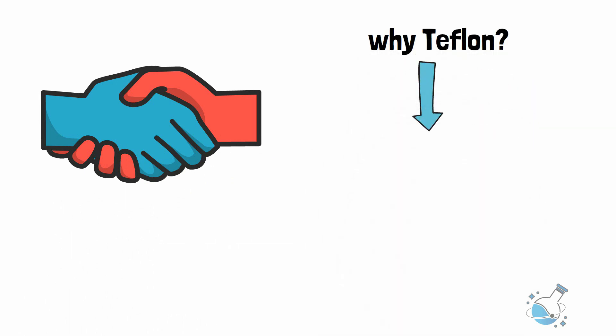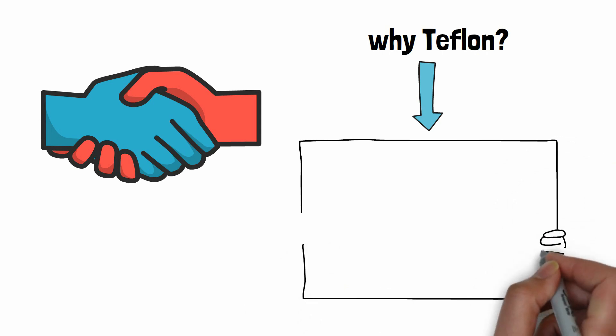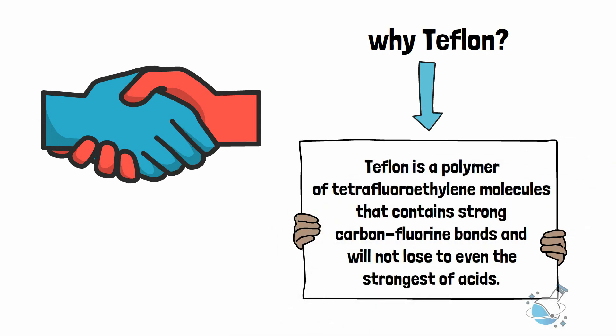Teflon is a polymer of tetrafluoroethylene molecules that contains strong carbon-fluorine bonds and will not lose to even the strongest of acids.